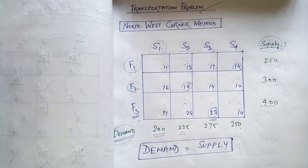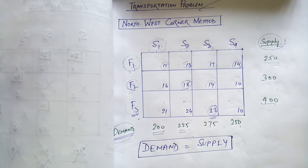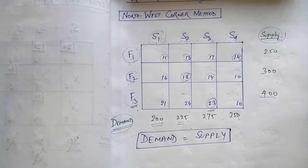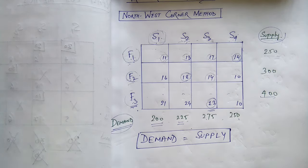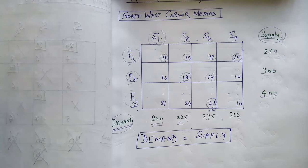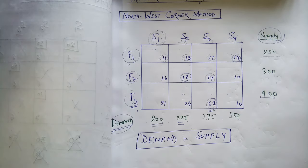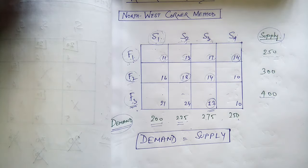These values are the cost of transporting one item. As an engineer, your job is to minimize the total cost. To minimize the total cost, we will learn about three different methods: the Northwest Corner Method, the Least Cost Method, and Vogel's Approximation Method. But in this video, we will talk about the Northwest Corner Method only.